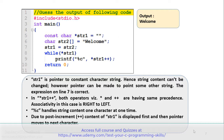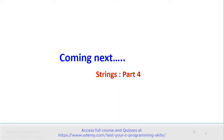In the expression *str1++, both operators — star and plus-plus — have the same precedence. However, associativity in this case is right to left, so plus-plus is applied first and then star. %c handles string content one character at a time. Due to post-increment, the content of str1 is displayed first and then the pointer is moved to the next location. That is why it displays the message 'welcome'. Coming next is the fourth session on strings — until then, enjoy C programming.